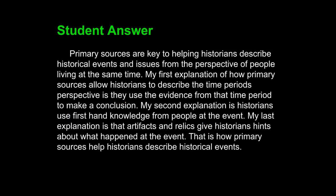Let's take a look at another student answer. 'Primary sources are key to helping historians describe historical events and issues from the perspective of people living at the same time.' Clear enough — it's a paragraph about primary sources. The second sentence is where we see weak sequence writing getting the author in a bind. Look at the subject: 'My first explanation of how primary sources allow historians to describe the time period's perspective' — that's all one subject — and there's your verb: 'is.' The rest of the sentence seems clear, but the first portion is overly wordy, complicated, and rests upon the weak verb 'is.' The author continues this structure: 'My second explanation is' and 'My last explanation is.'